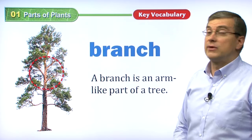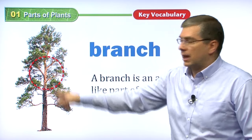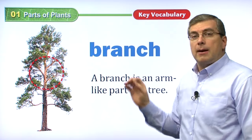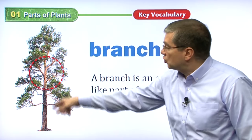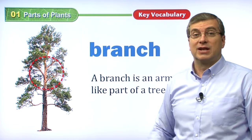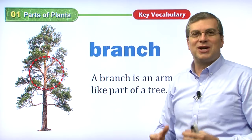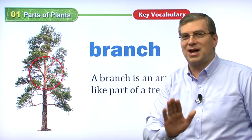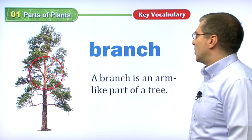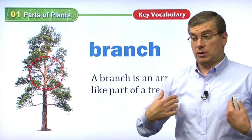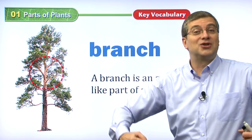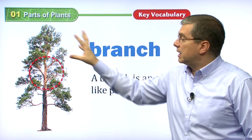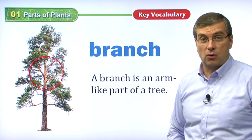What is another part of the plant? Especially on trees — not so much small plants, but for big trees — we can see a branch. Plural: branches. A tree has many different branches. A branch is an arm-like part of a tree. If you look at me, I've got two arms — it's like two branches. But a tree of course has many different branches, and these support the leaves where the tree takes in air and sunlight.